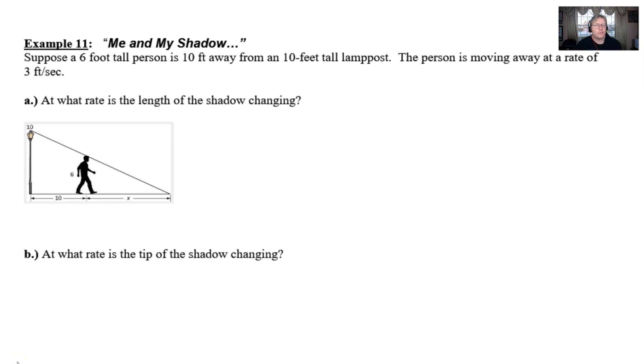As you can see, the problem reads: Suppose a six-foot tall person is 10 feet away from a 10-foot tall lamppost. The person moves away at a rate of three feet per second. All the preliminary information that we need, we can dive right in and answer really two questions.